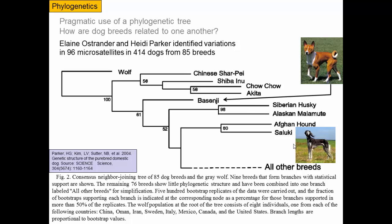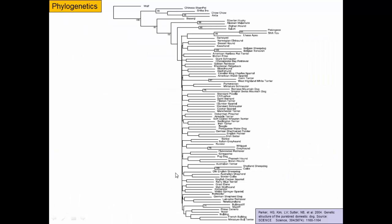We know these to be old breeds — Salukis appear in drawings on Egyptian pyramids and are mentioned in the Quran as an acceptable pet dog. So historical records confirmed they were ancient breeds, and the phylogeny agrees. All the other breeds we're familiar with are lumped together in a very flat phylogeny, suggesting that at one point in domesticated animal breeding, we suddenly invented a whole bunch of different breeds of dogs — all within just the past few hundred years.